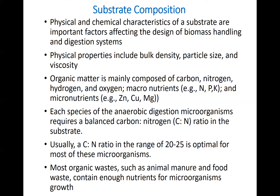The optimal range for the C:N ratio is between 20 and 25. Below this range, you have more nitrogen, which is undesirable because a nitrogen-rich feedstock can produce a lot of ammonia, and ammonia can inhibit the process. On the other hand, if you have a higher C:N ratio, there may be nitrogen limitation for microbes to grow, and it might also lead to higher concentrations of volatile fatty acids that can inhibit the process. Most organic waste, especially manure and food waste, contain enough nutrients for microorganism growth.